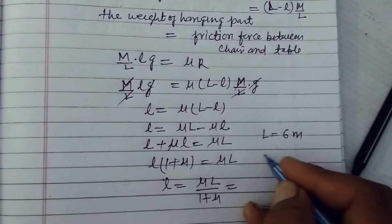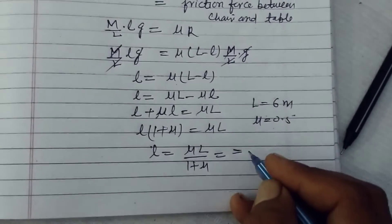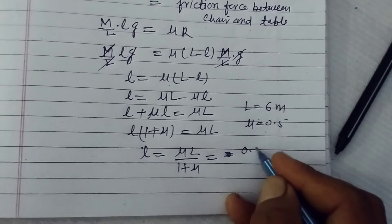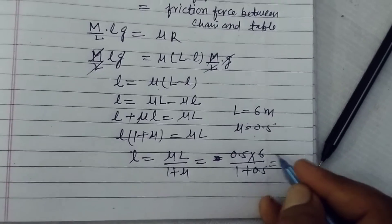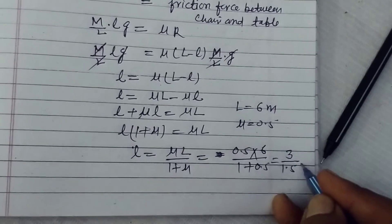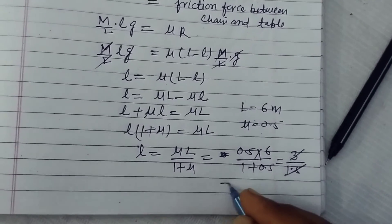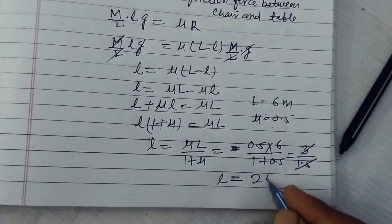Here L is given to us 6 meter, mu is given to us 0.5. Therefore we can easily find this: mu is 0.5 into 6 upon 1 plus 0.5. So this is 3 and this is 1.5, and we divide 3 by 1.5, we got 2. Therefore l is 2 meter.